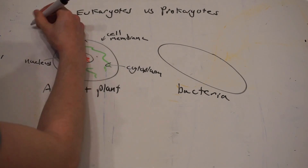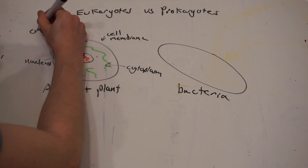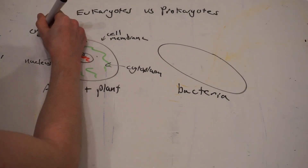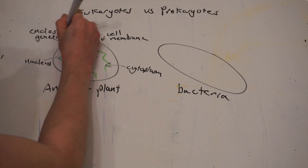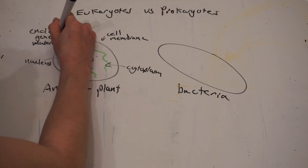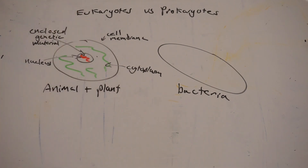Also mitochondria, the powerhouses of the cell. This is where most reactions for aerobic respiration take place, which allows energy transfer within the cell to allow reactions to occur. And also ribosomes, which is where proteins are made in the cell. So those are all found in animal cells.